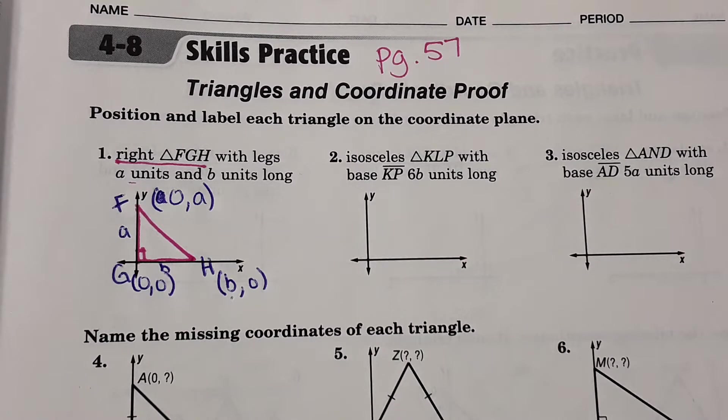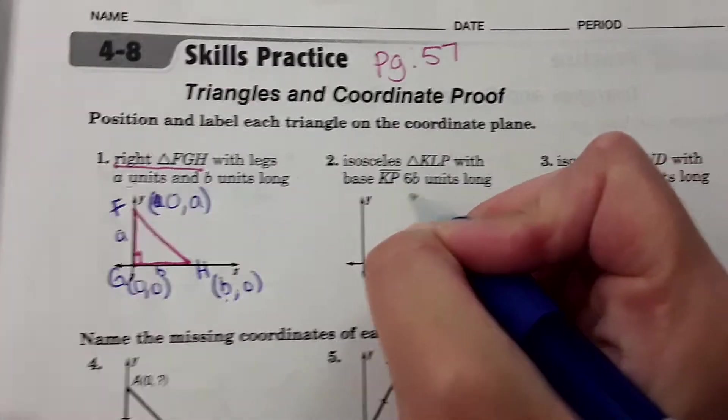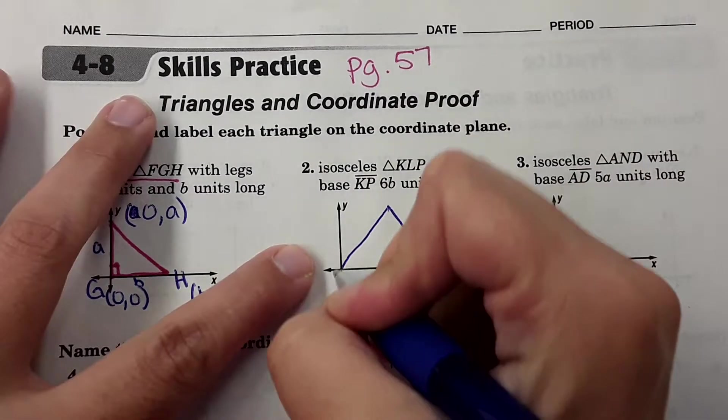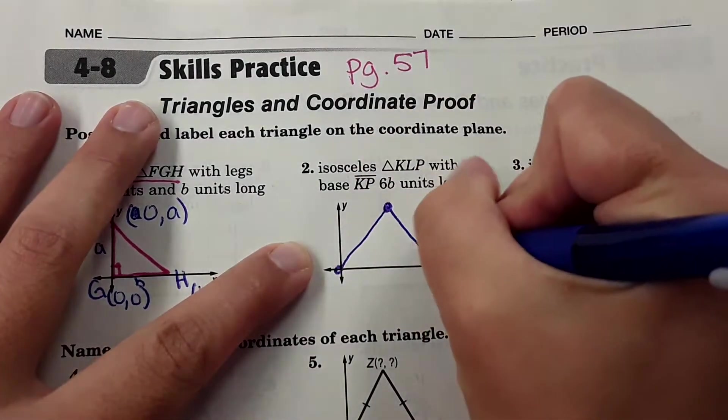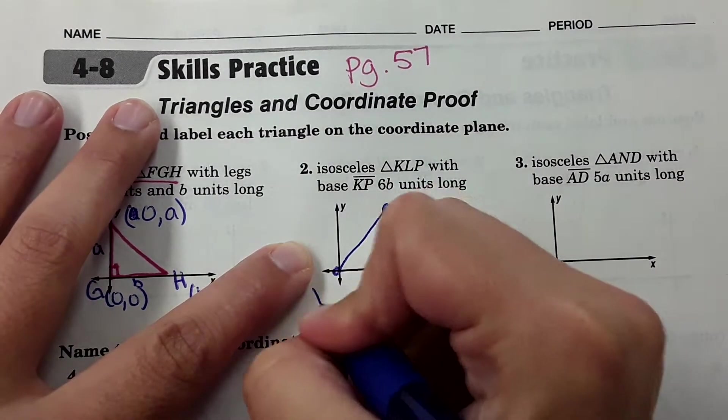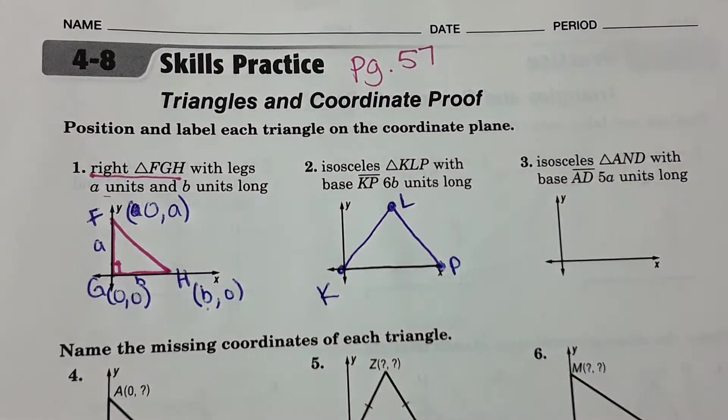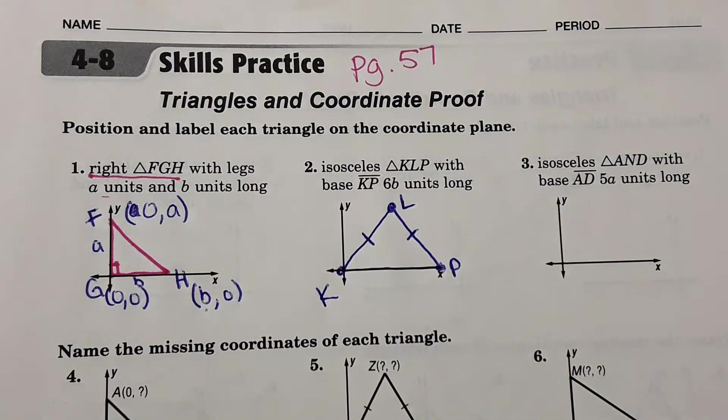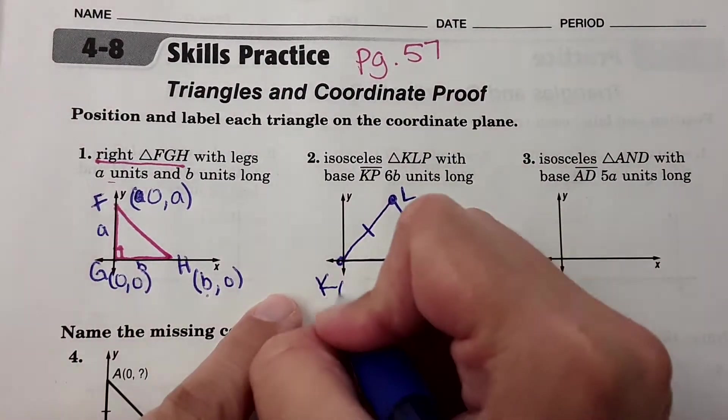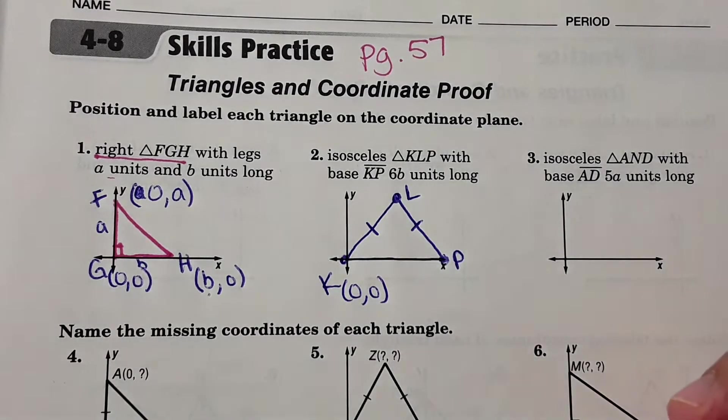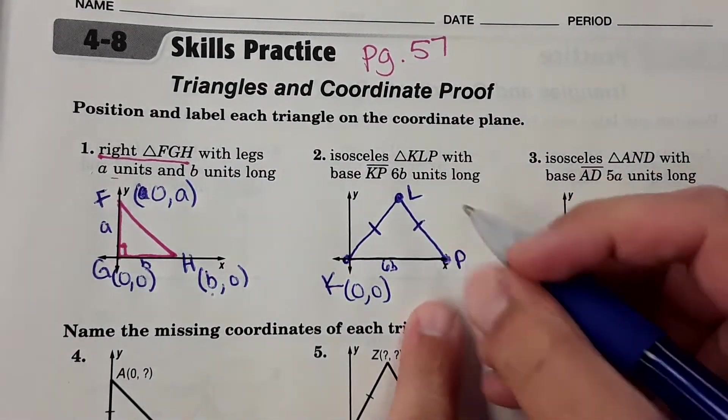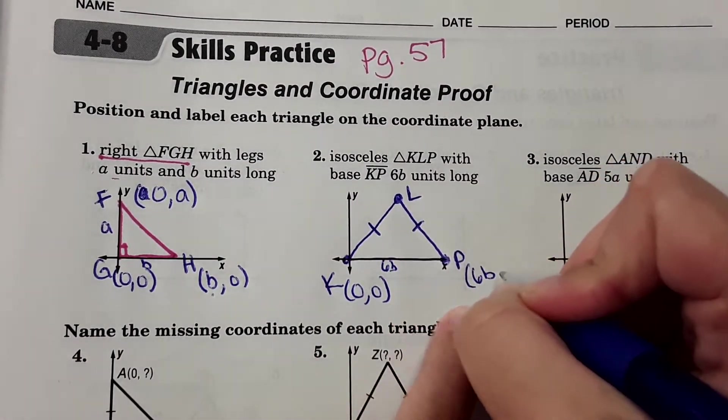If it doesn't make sense, just stick with it. Then number two: isosceles triangle KLP. So now I'm going to draw it like this. K L P. And it's isosceles, so this is the same length as this. K is at the origin, that's zero zero. And then it tells us that base KP is six B units long, so our coordinates for P would be over six B, up zero.